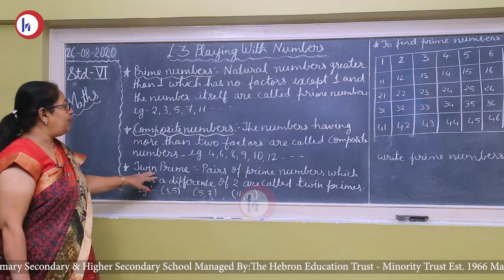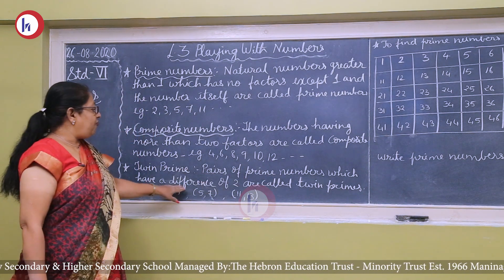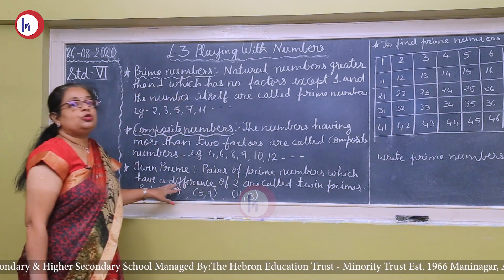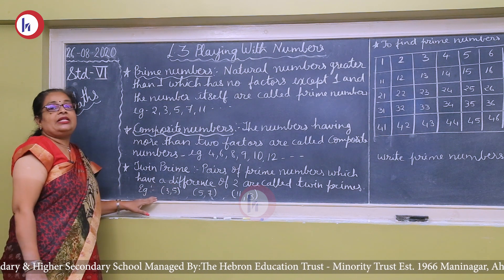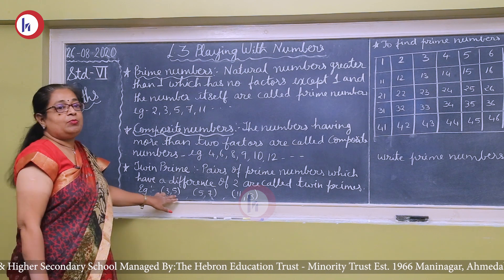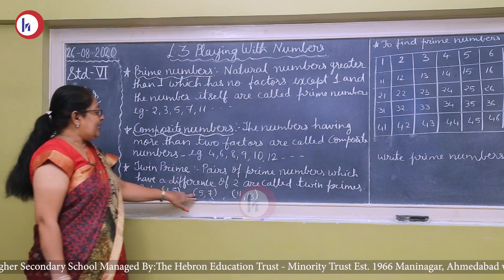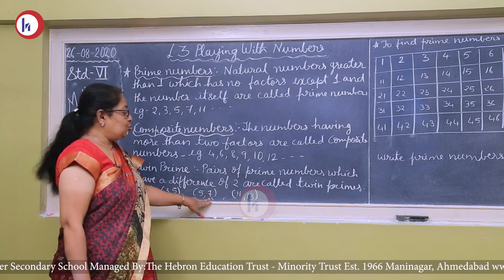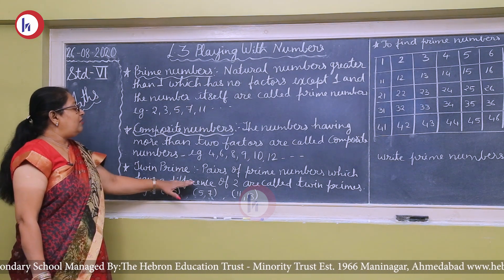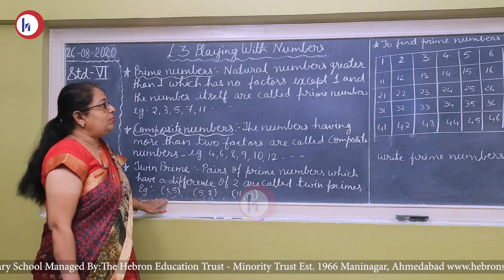Next we come to twin prime numbers. Pairs of prime numbers which have a difference of 2 are called twin prime numbers. For example, 3 and 5 are both prime numbers and their difference is 2. Same way, 5 and 7 — difference is 2. And 11 and 13 — difference is 2. Such pairs of prime numbers are known as twin prime numbers.